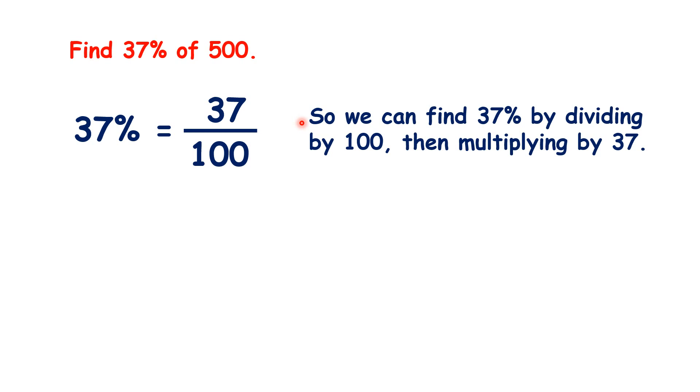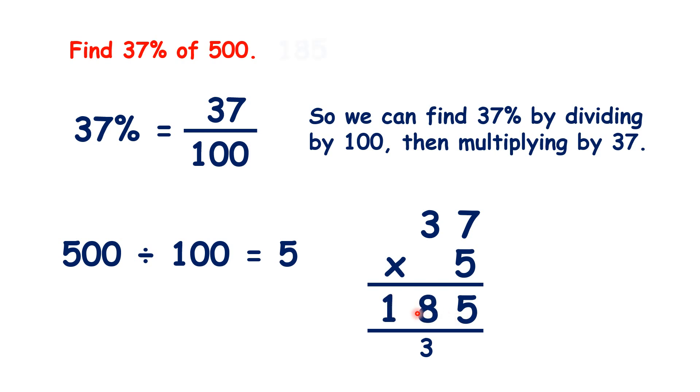So how can we find 37% of 500? 37% is 37 hundredths, but that fraction can't be simplified. But it doesn't matter, we do the same thing, dividing by the denominator and multiplying by the numerator. So we can find 37% by dividing by 100, then multiplying by 37. 500 divided by 100 is 5, and 5 times 37 is 185, so that's our answer.